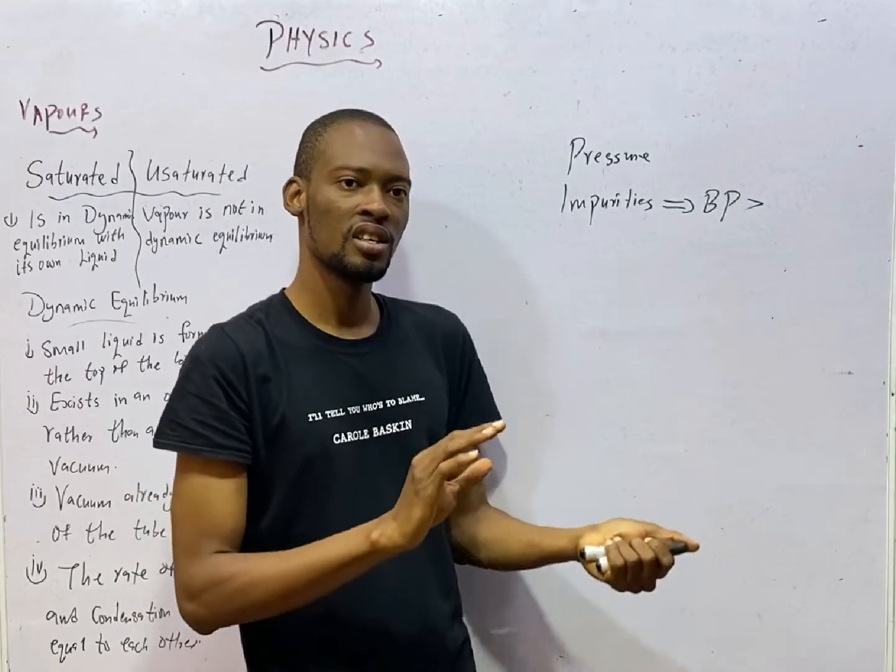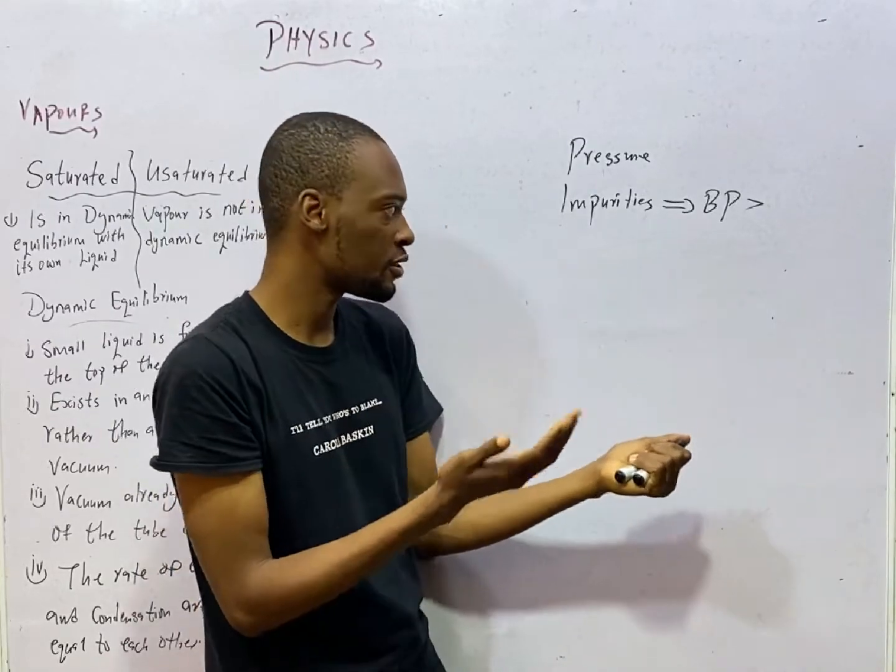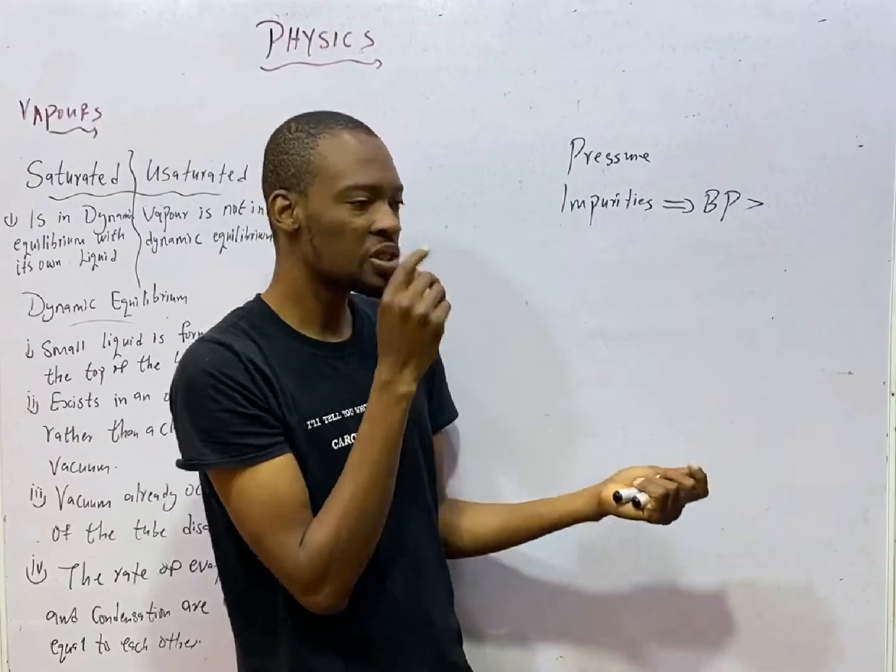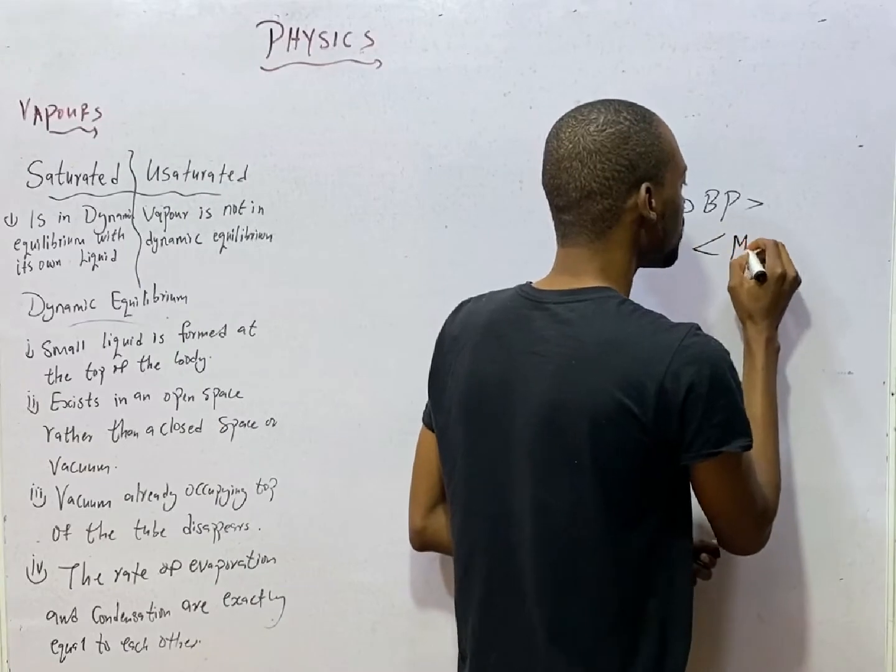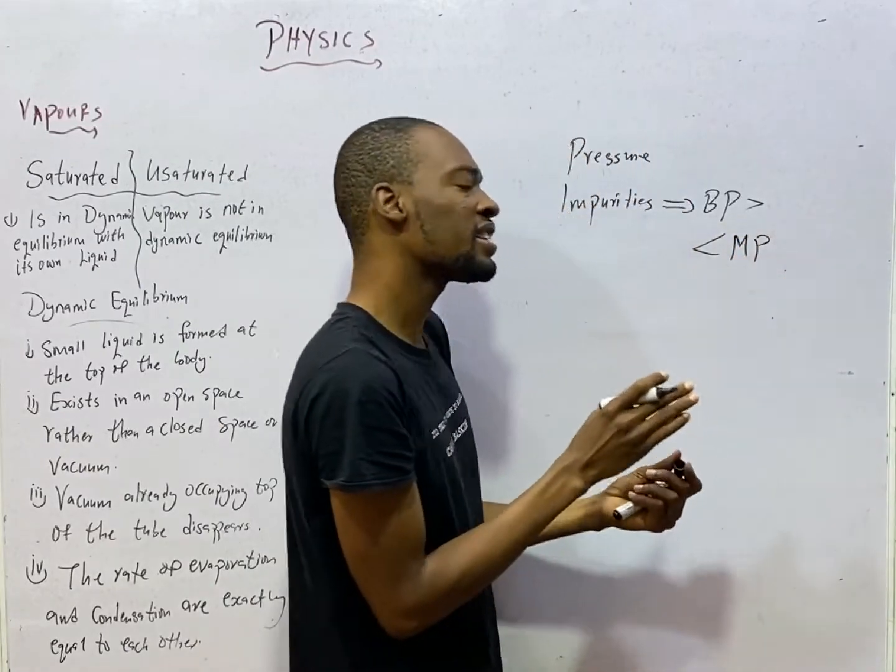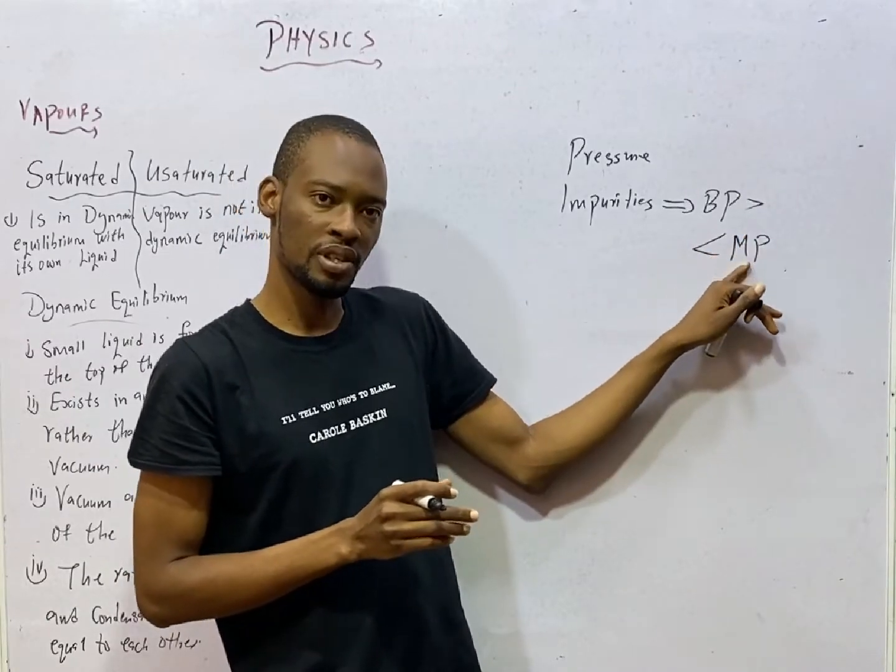Why? Those particles in the liquid try to stabilize that liquid base. On the other hand, impurities reduce melting point. So the presence of impurities will increase boiling point, but they will reduce melting point.